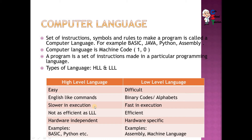High-level language programs are hardware-independent, meaning the program you make on one machine can be transferred to another computer and run just as efficiently. But in assembly language, this is a limitation — a program made on one computer may have difficulty or errors when run on a different computer. Assembly language programs are machine-dependent, meaning they can typically only be run on the machine type for which they were written.